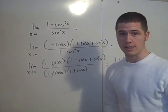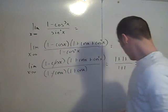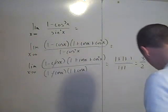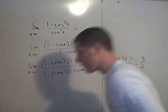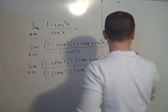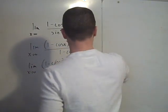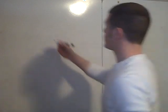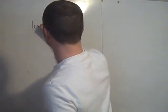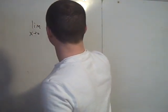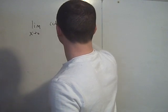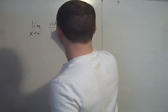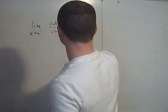You should confirm that graphically. Let me do another one where you have to use a different trigonometric identity. Consider the limit as x goes to 0 of the cotangent of 2x over the cosecant of x.